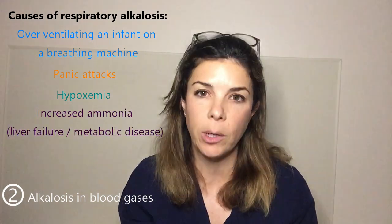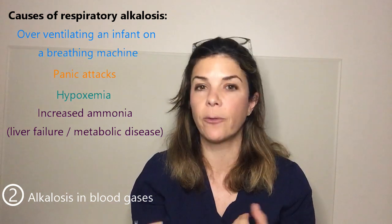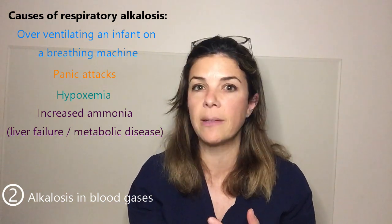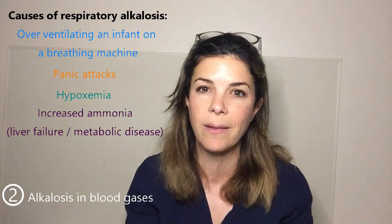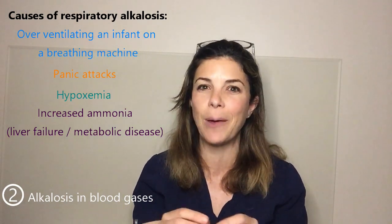Another interesting cause of respiratory alkalosis is a high ammonia level. You can end up with high ammonia from liver disease, from a metabolic disease like urea cycle defects, or from a disease that premature infants get called transient hyperammonemia of prematurity. These can all result in ammonia levels in the several hundreds, and for whatever reason this causes a respiratory alkalosis. Sometimes this is how these diseases are actually diagnosed — you end up with a low CO2 of uncertain etiology and start investigating the cause.